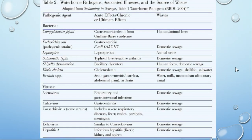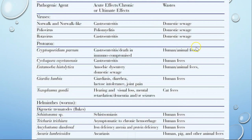Fecal coliform in itself is actually not pathogenic, but it does indicate you have other bacteria present. These contaminated waters contain bacteria, viruses, and protozoa — including cryptosporidium (which causes cryptosporidiosis), Giardia, and Toxoplasma. We look for fecal coliform as an indicator of sewage and waste contamination.